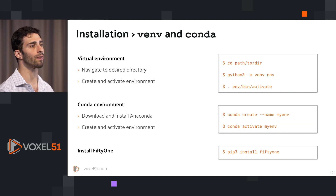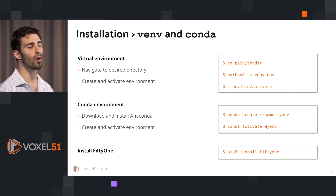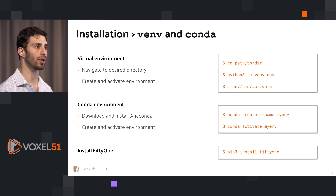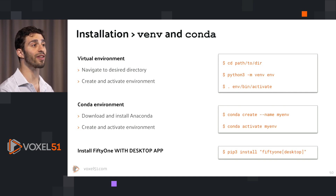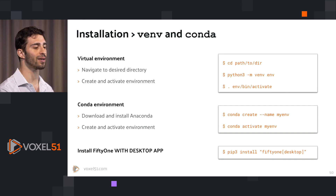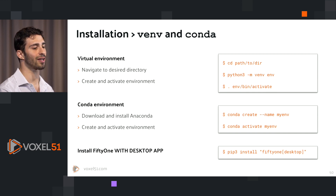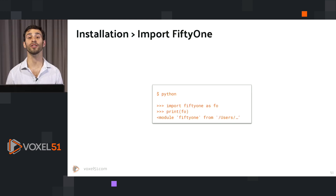Once you've done that, you can install FiftyOne with `pip install fiftyone` or `pip3 install fiftyone`. You can also use a conda environment, but we're not going to walk through that process because you need to install conda or miniconda separately. If you want to install the standalone desktop app, you can do that with a slightly different command: `pip3 install 'fiftyone[desktop]'`.